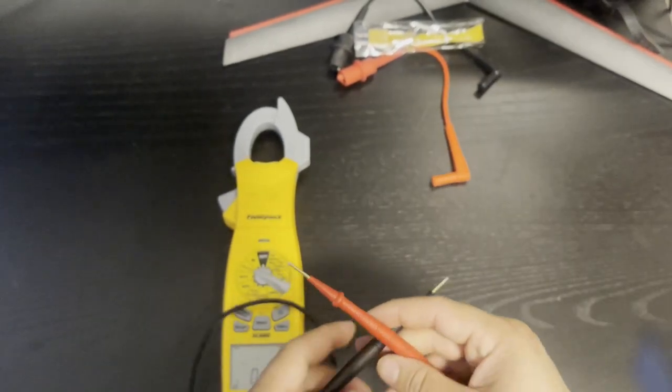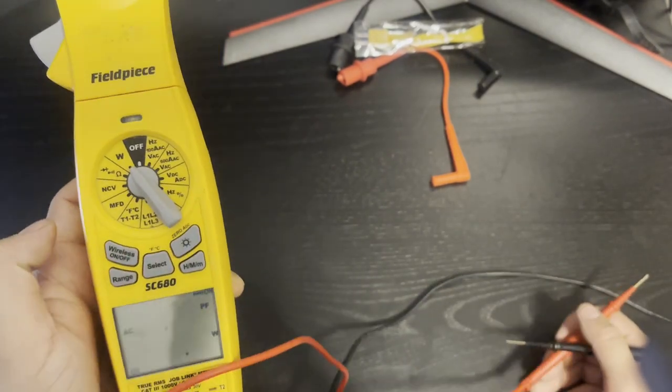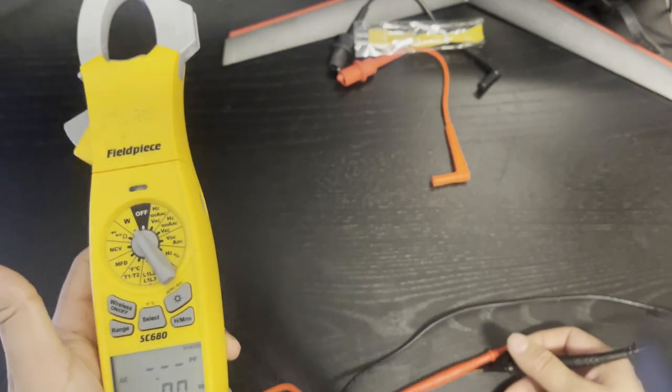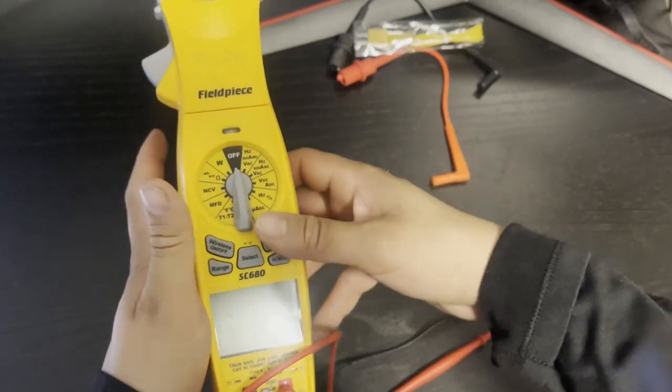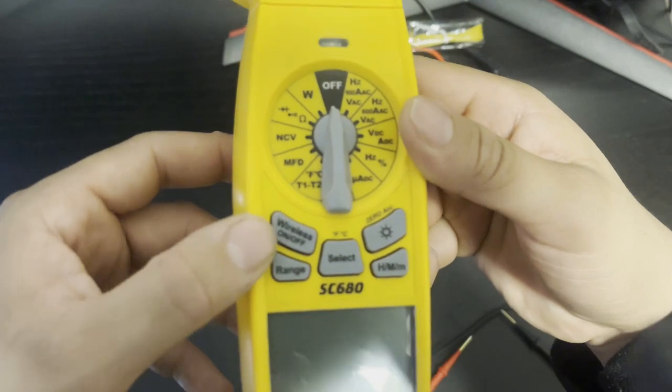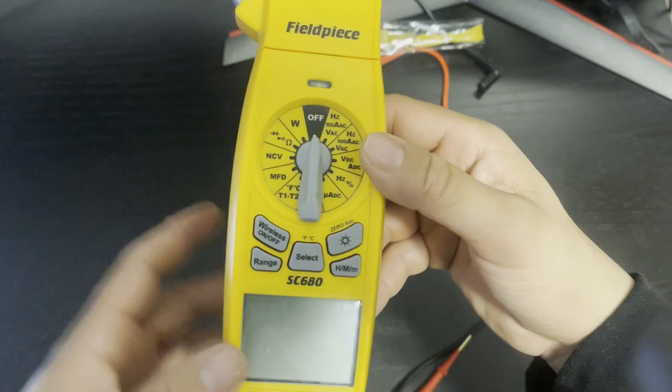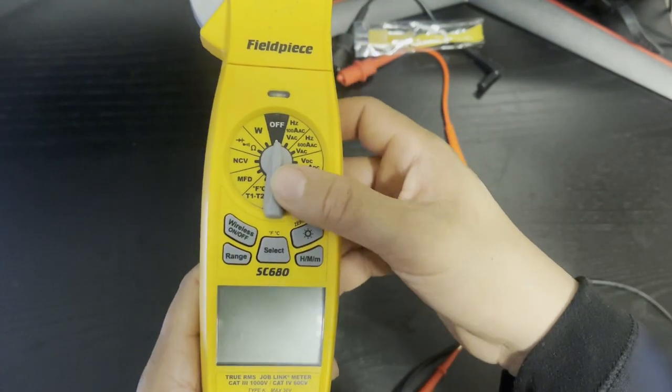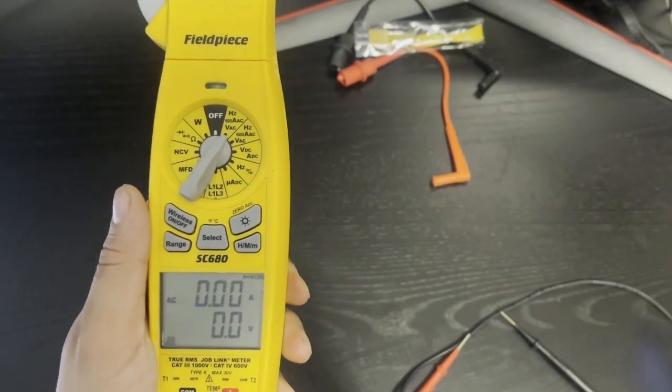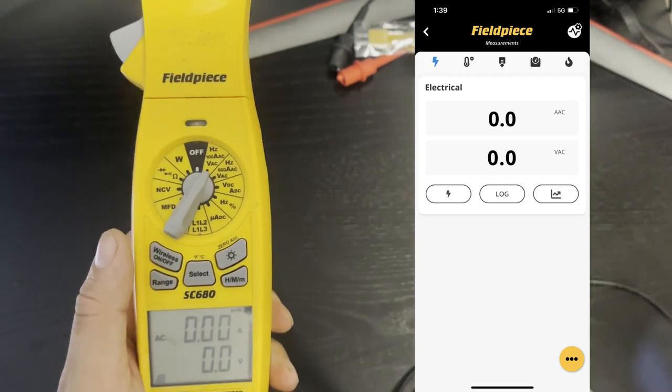This meter also does watts which I really don't mess around with, I don't know what it's there for. But this is my favorite meter here for one big reason. This little button right here, wireless on or off. So what that means is you can actually have this meter bluetooth pair to the Fieldpiece Job Link app, meaning you can get your readings on the phone. If you want to screenshot it, put it on the job file.